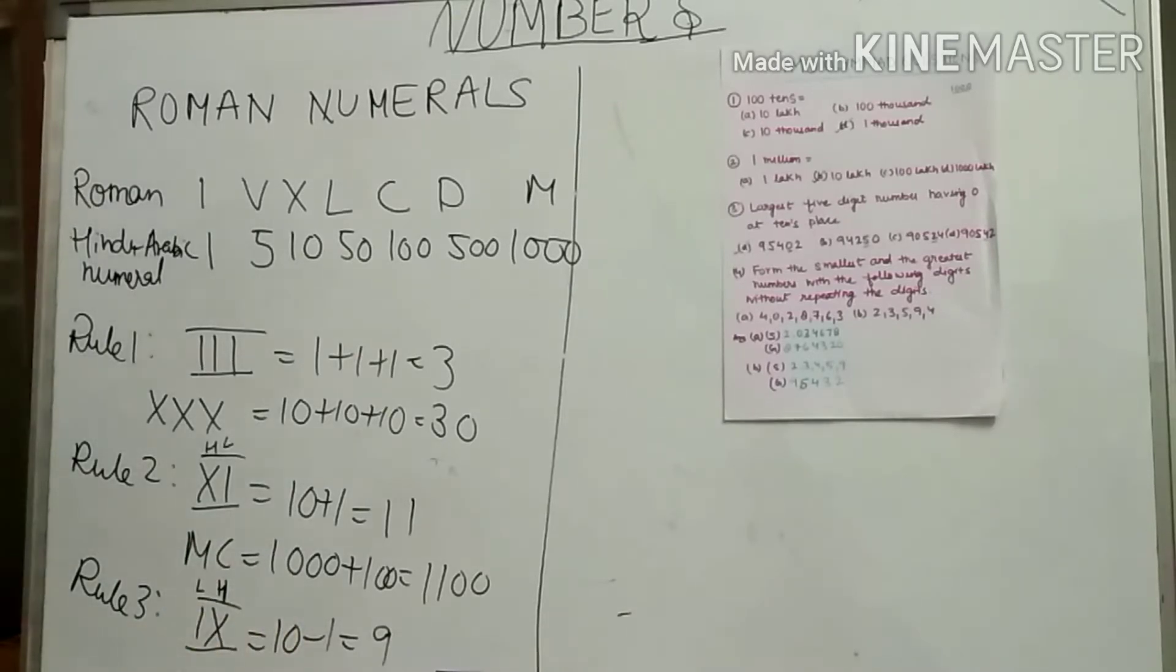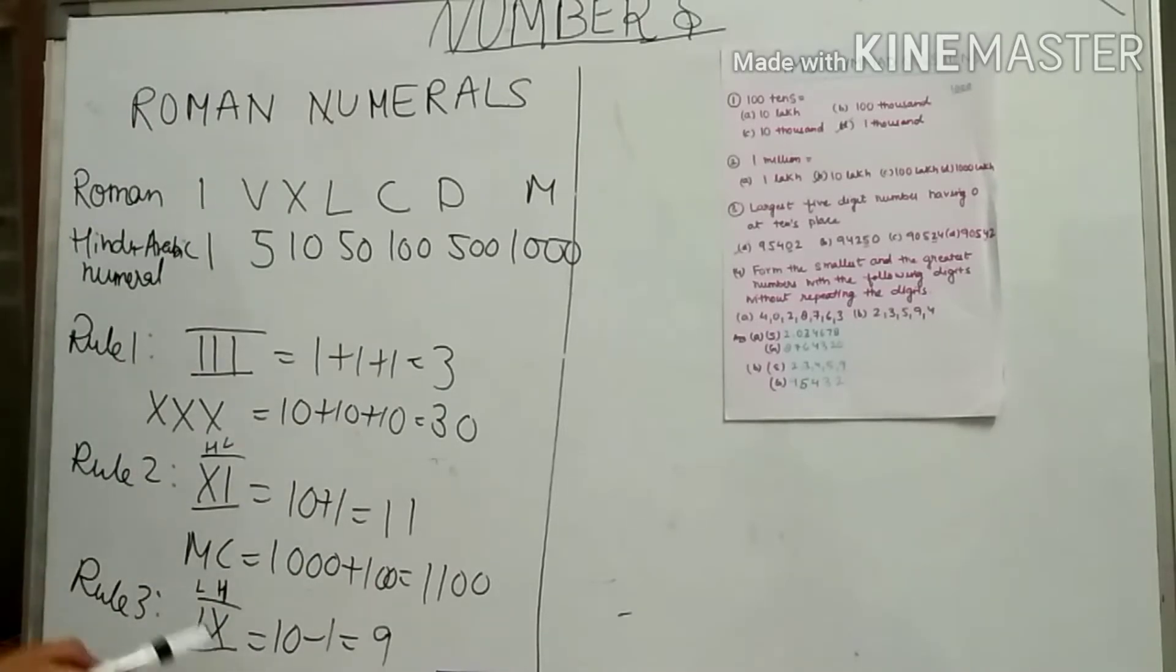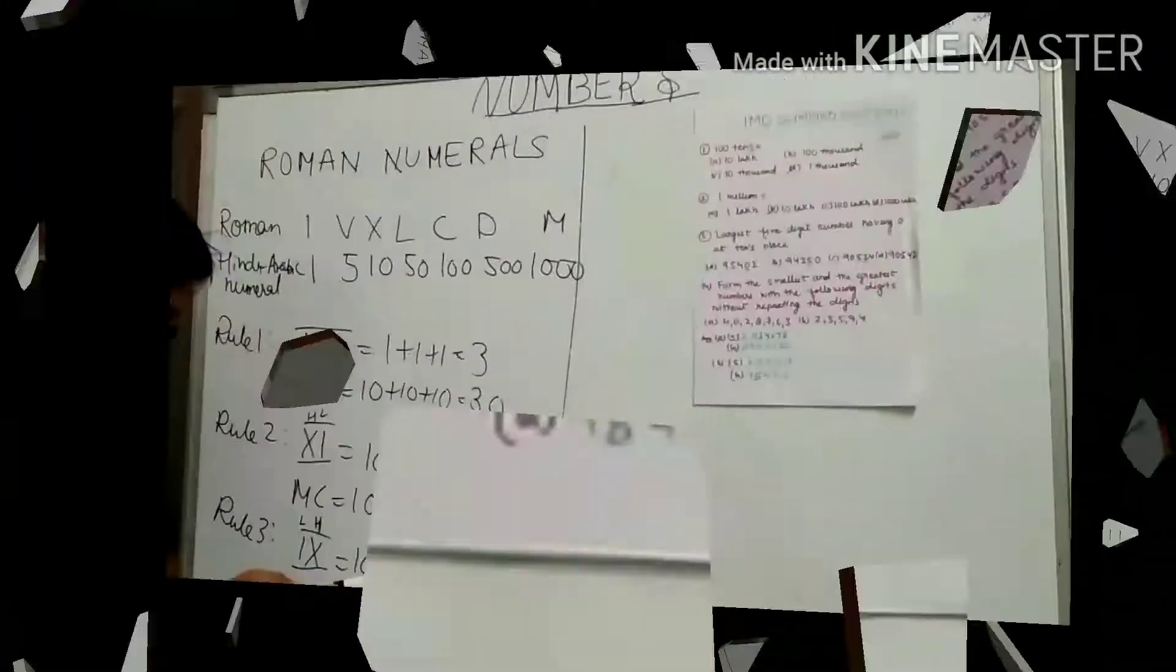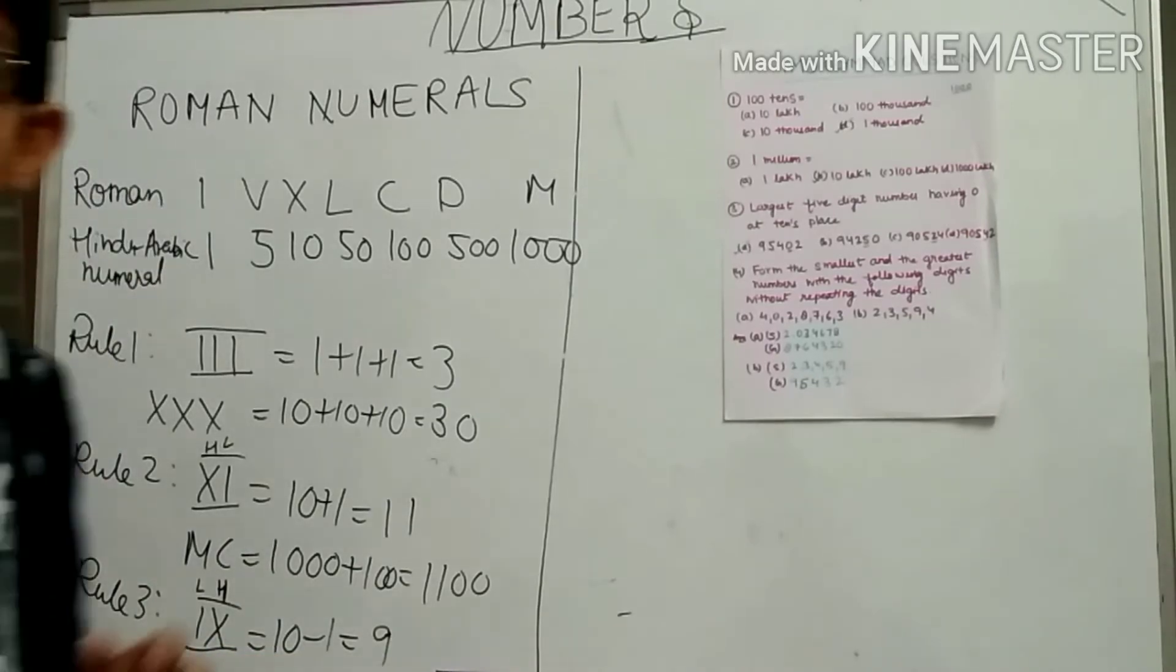We have to do plus. XI equals 10+1 equals 11. Rule 3: if this is lower digit and this is higher digit, we have to subtract. IX equals 10-1 equals 9.